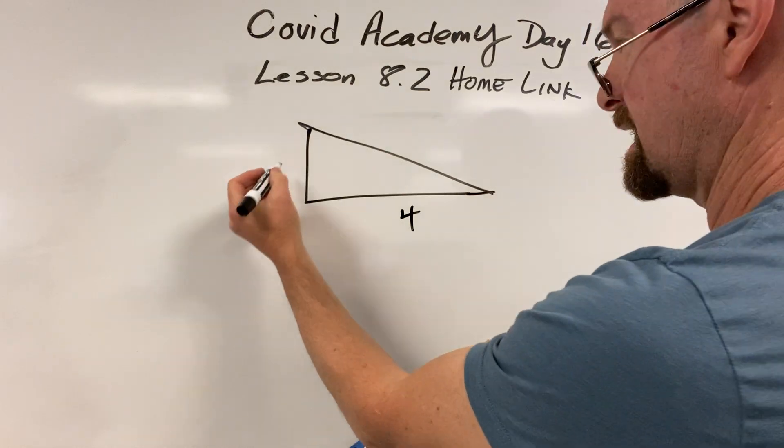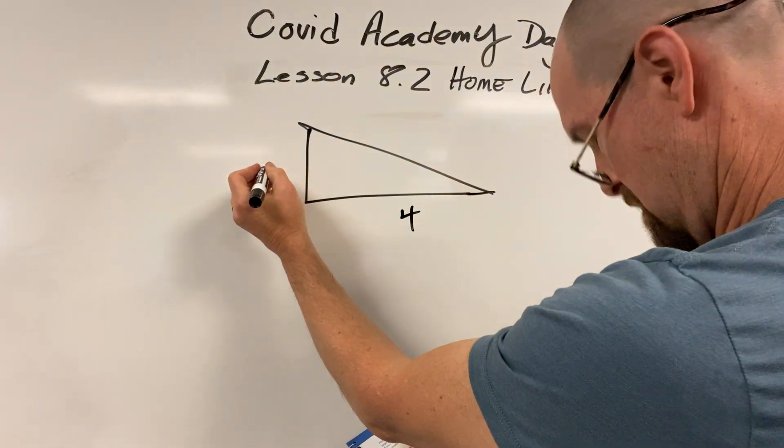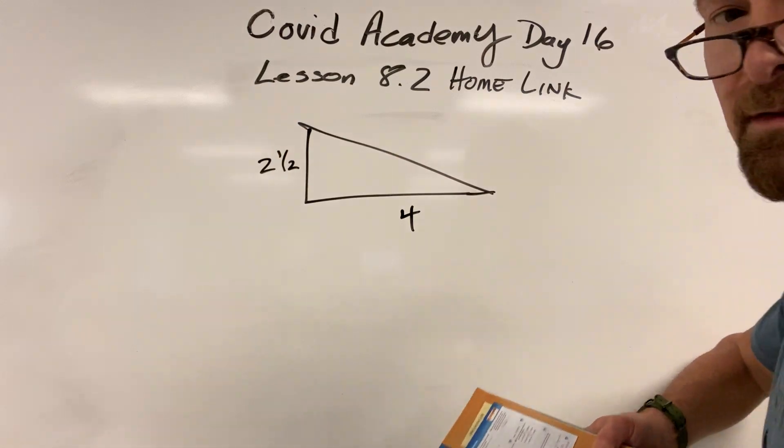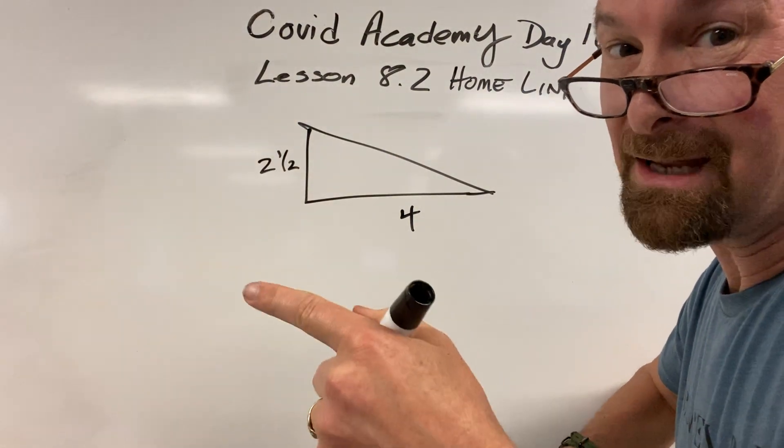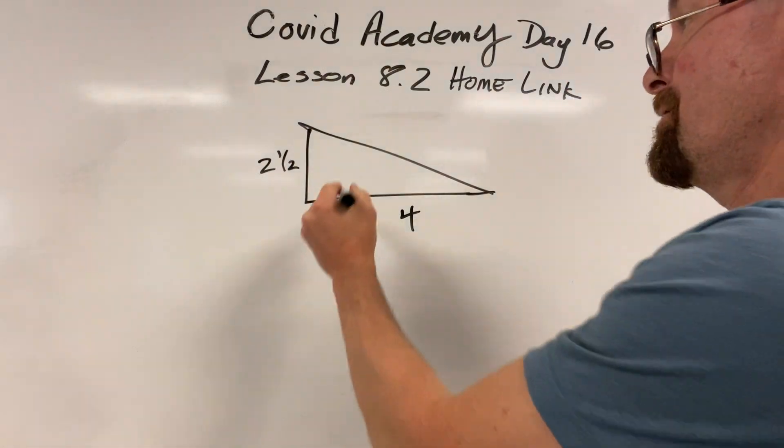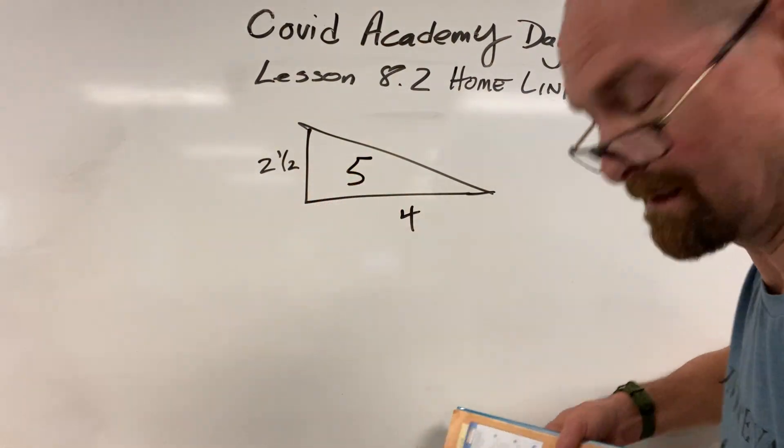It is 2 and a half. Do 4 times 2 and a half, and then take half of it. It's a triangle. So 4 times 2 and a half is 10. You got to take half of it. It's 5. That's the answer to the first one.